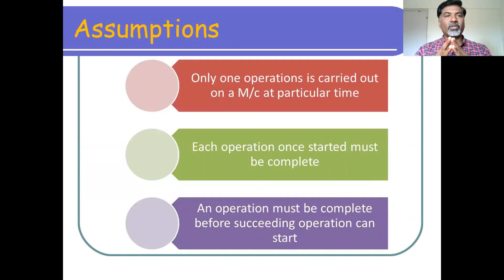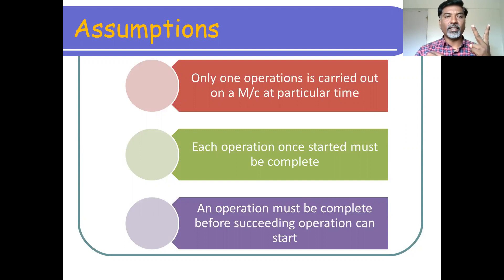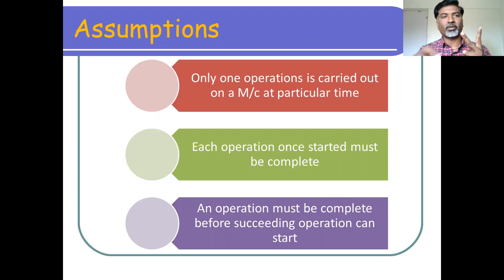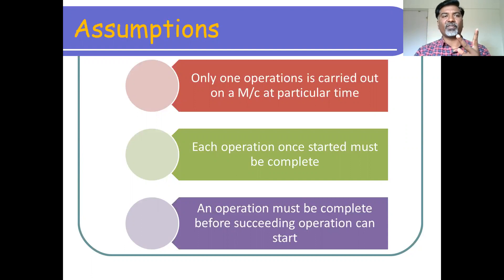In job sequencing, some assumptions are made. The first assumption is that only one operation is carried out on a machine at a particular time — a single machine can process a single job at a time. The second assumption is that each operation, once started, must be completed. You cannot stop a job operation in the middle and start another job. Once you start a job, you have to wait for the machine to get free until that job finishes.